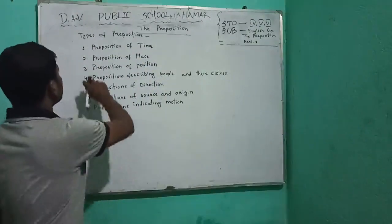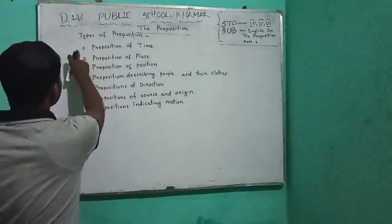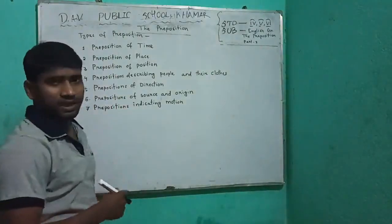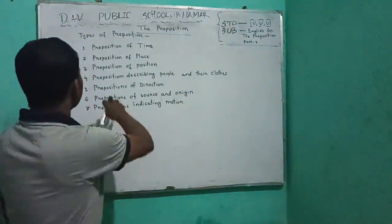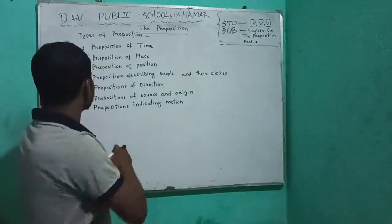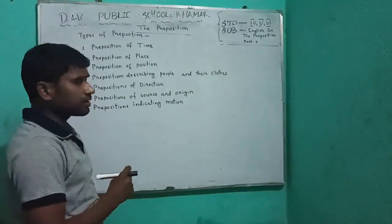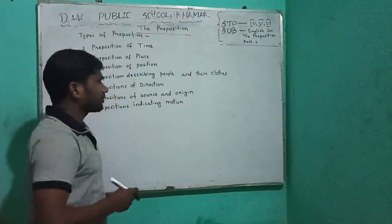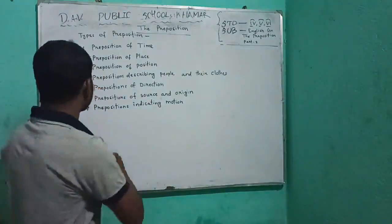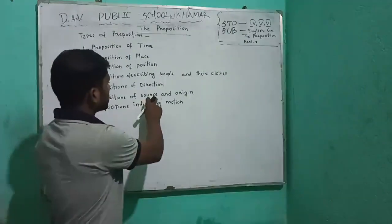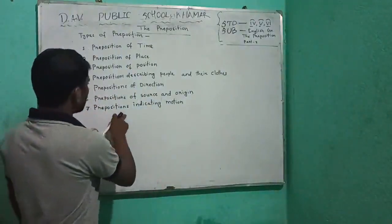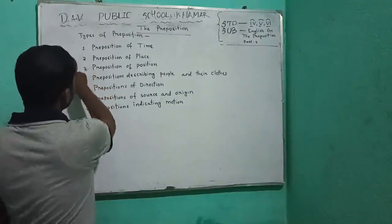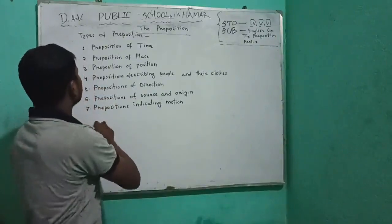I have already written the types of prepositions. There are seven types: preposition of time, prepositions of place, prepositions of position, prepositions of direction, prepositions describing people and their clones, prepositions of source and origin, and prepositions indicating motion. I have categorized them into seven different types.